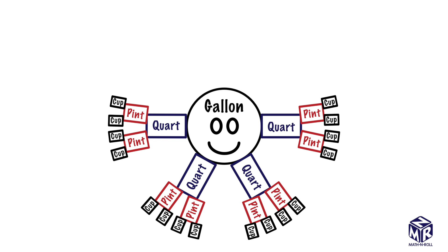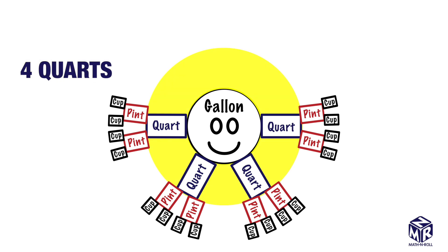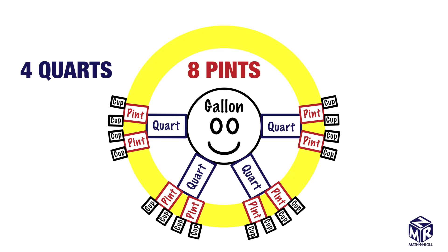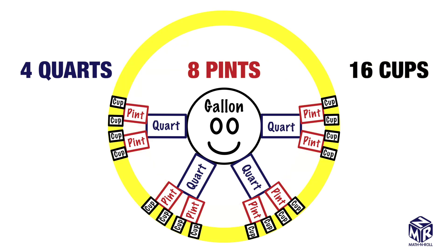So, 1 gallon has 4 quarts, or 8 pints, or 16 cups. If you forget the relationships between gallons, quarts, pints, and cups, you can always draw the gallon man to help you remember.